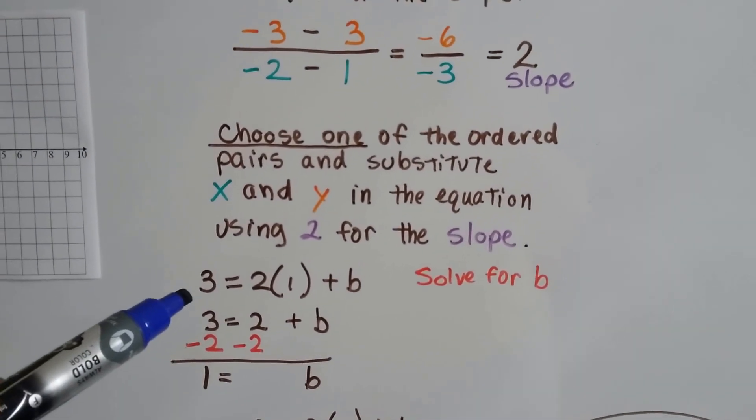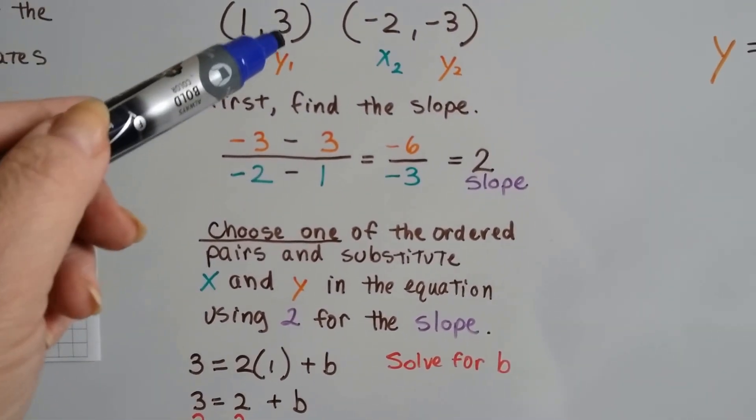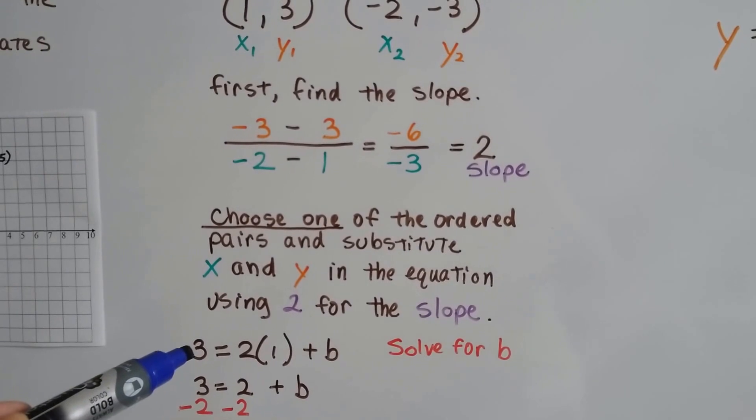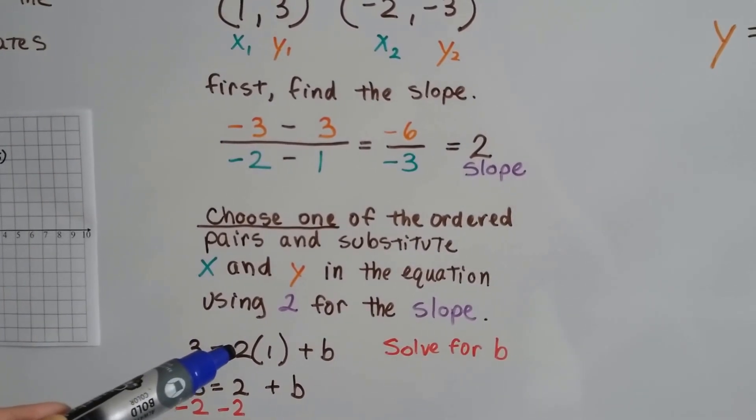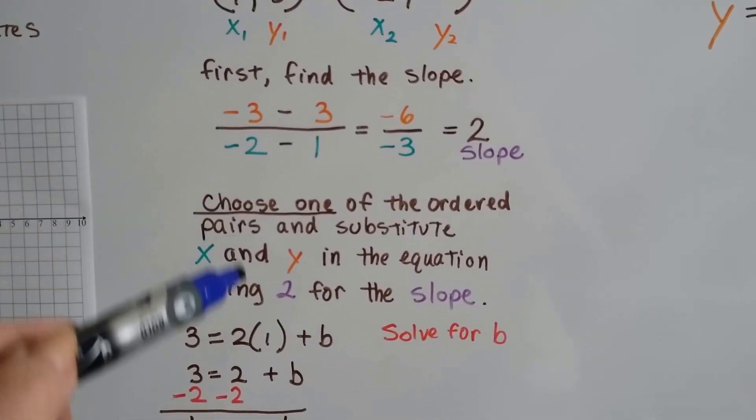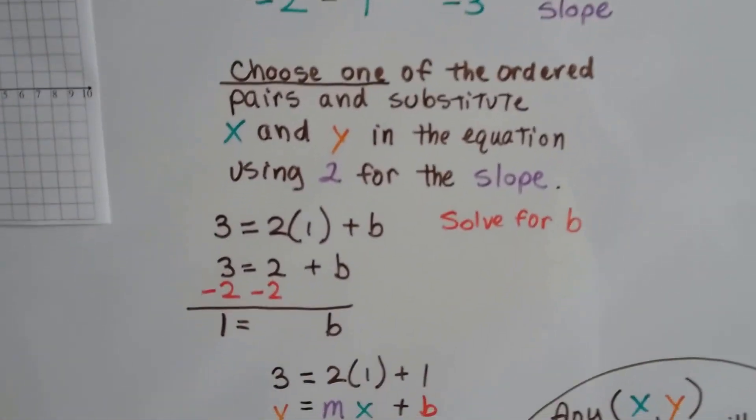So that means we've got a 1 and a 3. So our y value is a 3. Our slope is a 2. Our x value is a 1 plus b. Now we solve for b.